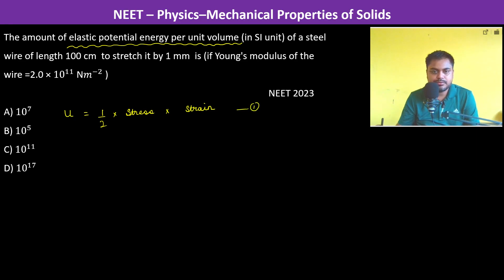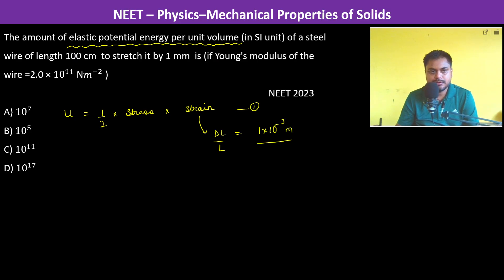Now let us find out the stress and the strain. Strain is simply ΔL by L, which is equal to 1 millimeter, so 1×10⁻³ meters, divided by L which is 100×10⁻² meters, giving a strain of 10⁻³.